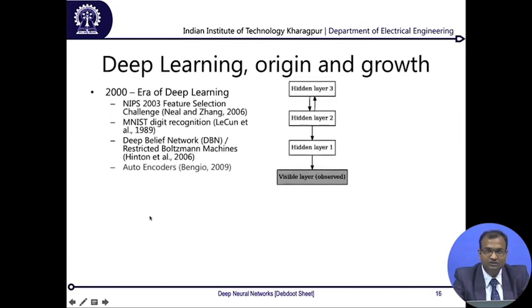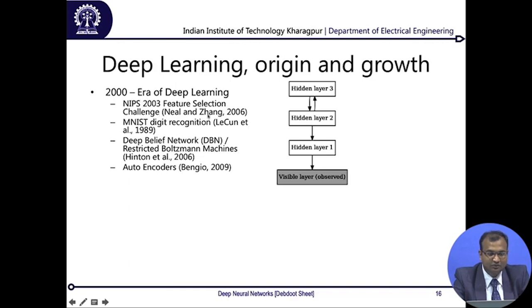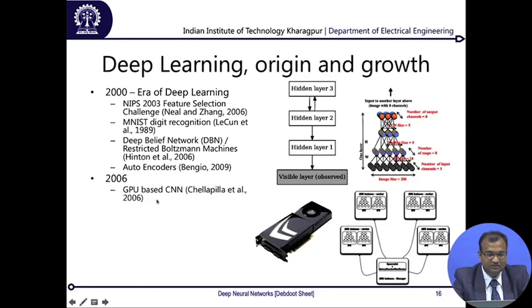From 2000 onwards we move beyond standard neural networks into the era of deep learning. It started with a deep neural network winning the NIPS 2003 challenge on feature selection, and LeCun's famous digit recognizer called LeNet — similar to what we will use later. From there came deep Boltzmann machines and autoencoders. Around 2006 onward there was a major boost, because these networks have enormous numbers of connections — the number of multiplications and non-linear operations is seriously large — requiring substantial computing power.